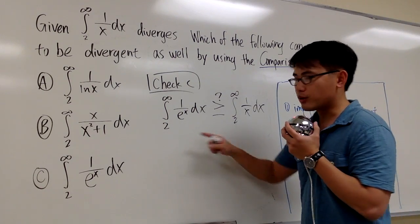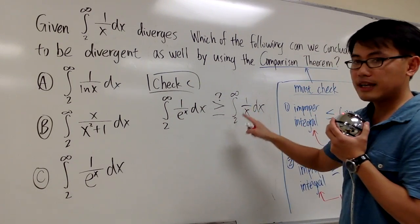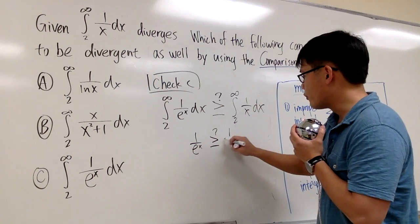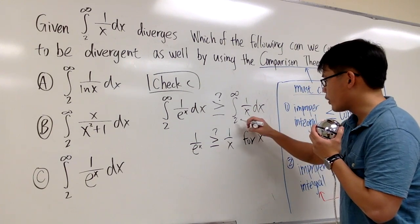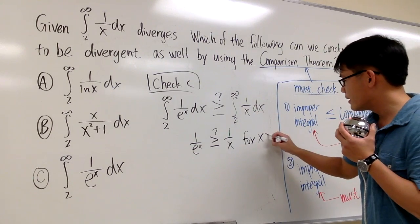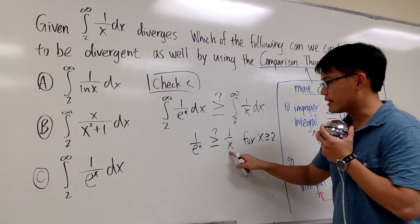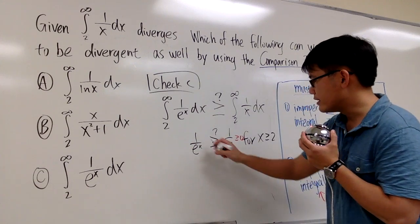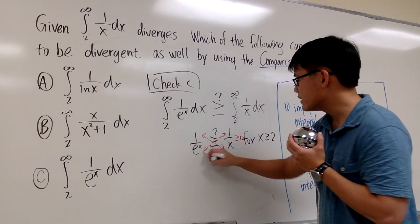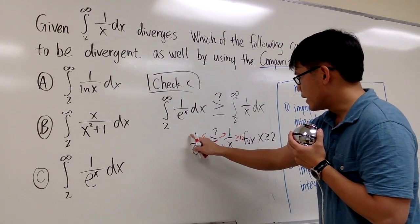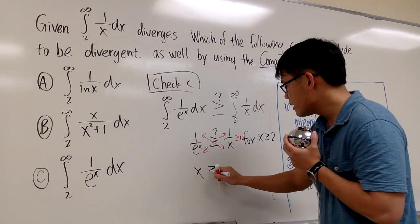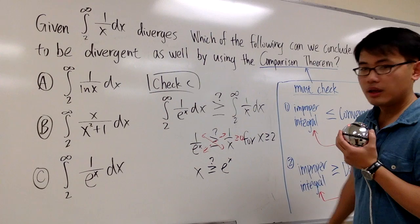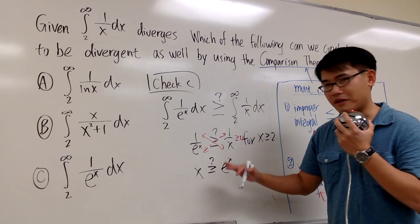Since both integrals go from 2 to infinity, I can just check the functions inside: is 1/eˣ ≥ 1/x for x ≥ 2? Since everything is positive, I can cross-multiply without switching the inequality symbol. That gives us x ≥ eˣ, and I need to determine if this is true or not.